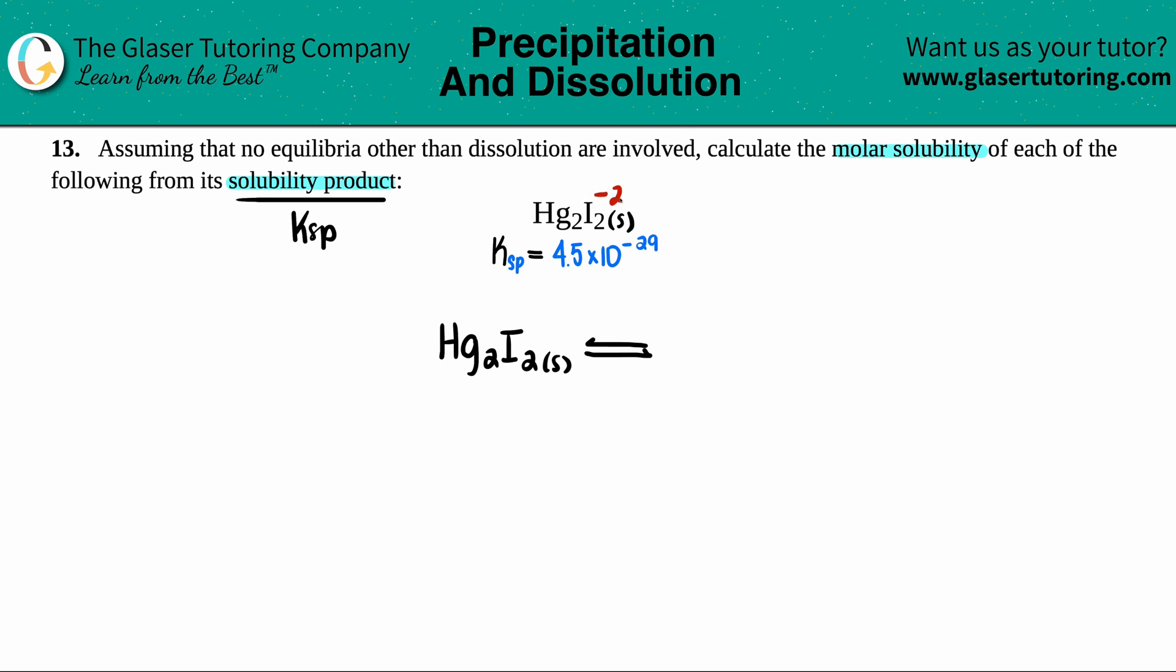And iodine, being a halogen, never is a negative two charge. So that means that this mercury has to be the polyatomic Hg₂. There was only one Hg₂. So I know that I have my polyatomic Hg₂ plus my iodine.